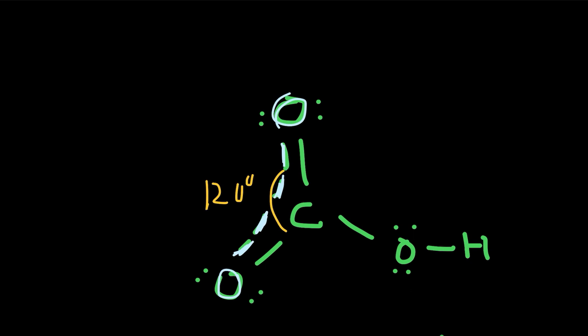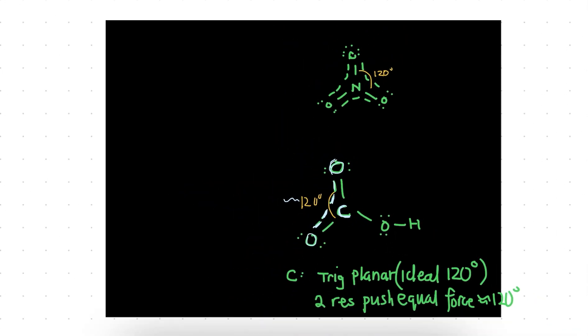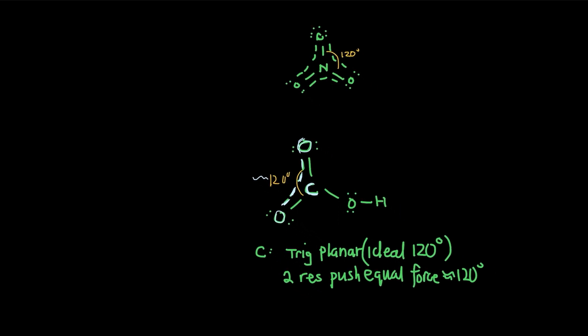These dashed lines represent delocalized electrons. So because they're delocalized electrons, both of these atoms are exerting similar equal force towards this carbon. So what will end up happening is your bond angles, where your resonance is concerned, will be very close to 120.